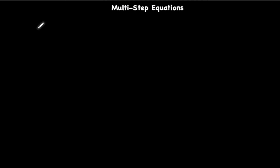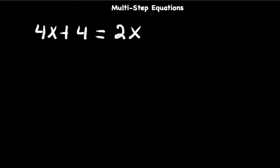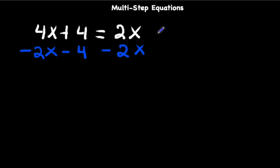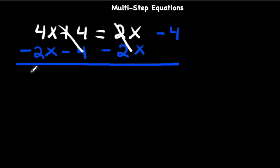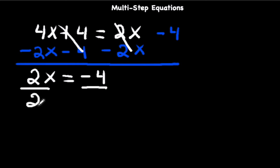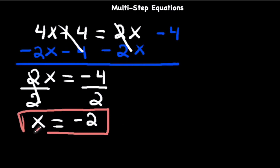Let's work with 4x plus 4 equals 2x. We'll subtract 2x from both sides and subtract 4 from both sides. So 4x minus 2x is 2x, equals negative 4. Dividing by 2, x is equal to negative 4 divided by 2, which is negative 2. So x equals negative 2.